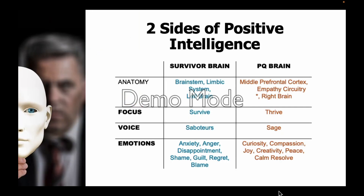As we discussed in the first video, there's two sides to it: a survivor brain and a PQ brain. The survivor brain is our negative brain — it sits in our limbic system, our lizard brain, and it's all about survival. The voice in your head comes from your saboteurs and the emotions it creates are those negative emotions. Whereas your PQ brain is what I call your adult brain — that middle prefrontal cortex — and it's about empathy circuitry and thriving. The voice in your head is that sage voice of wisdom, and the emotions are those positive emotions.